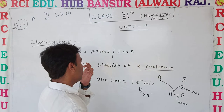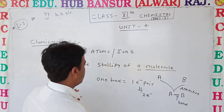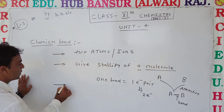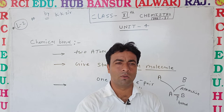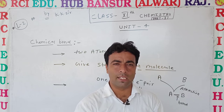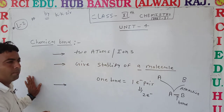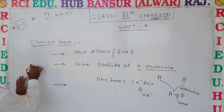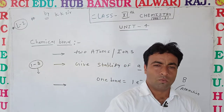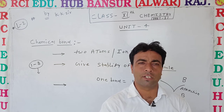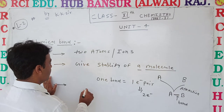One bond equals one electron pair, meaning two electrons. The number of bonds depends on the valence electrons. A central atom can have a minimum of one to eight valence electrons. In inorganic compounds, bonds can form from one to eight depending on the central atom, but in organic compounds there will be formation of four bonds because the central atom is mostly carbon.